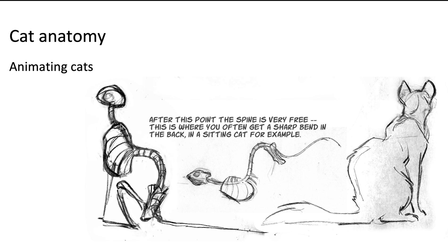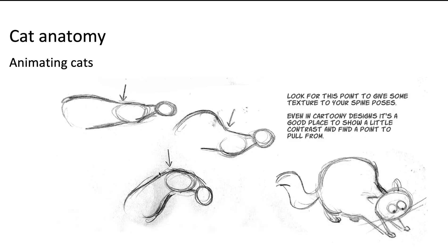Here are some notes on cats. You can see how the spine attaches to the rib cage, where there's a general lack of flexibility, but where the spine attaches to the stomach you've got much more flexibility. That's why you get that classic arching shape of the cat as viewed from the back.